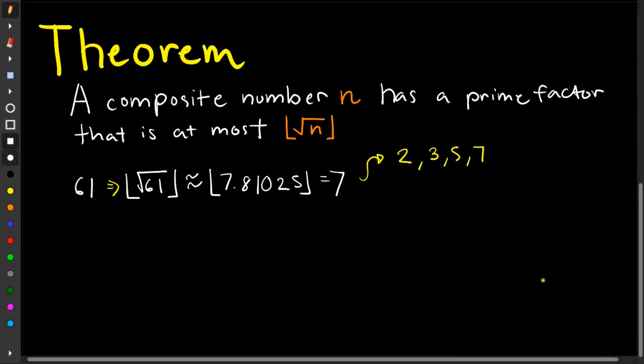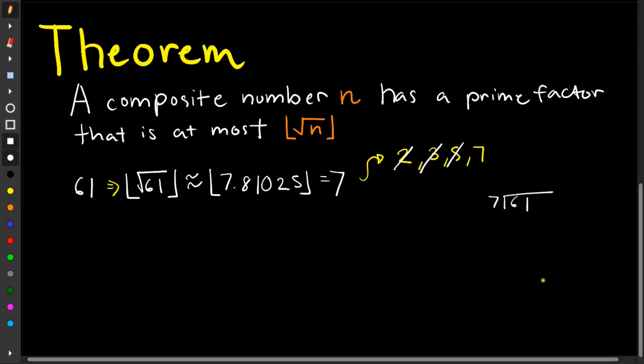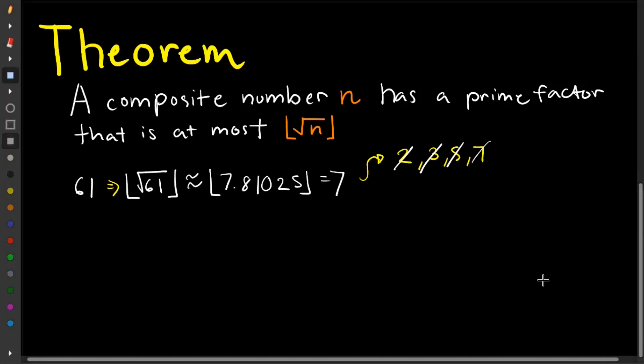So checking it, first clearly 2 does not divide 61, since 61 is not even. So it's removed. 3 as well, since 6 plus 1 is 7, which is not divisible by 3. 5, also no, since the last digit is not 0 or 5. For 7, to check if it is divisible by 7, let's try to divide it manually. So 7 divided by 61 is 8 remainder 5. So it's also not divisible by 7. So this implies that this number is prime.